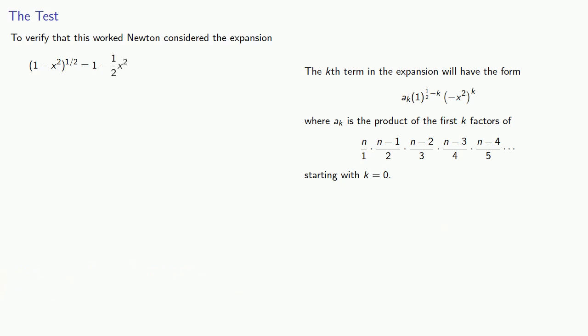So for the next term, the next coefficient will be the product of the first two factors here. Again, n equals 1/2, so that's 1/2 over 1 times (1/2 - 1) over 2, which is... And so our next term will be -1/8 times (-x²)² or -1/8 x^4.